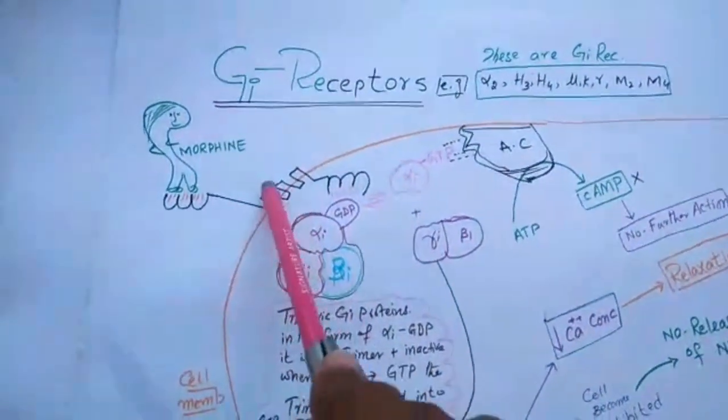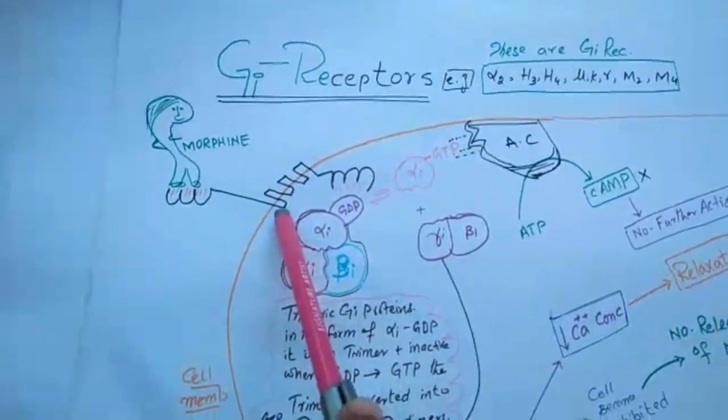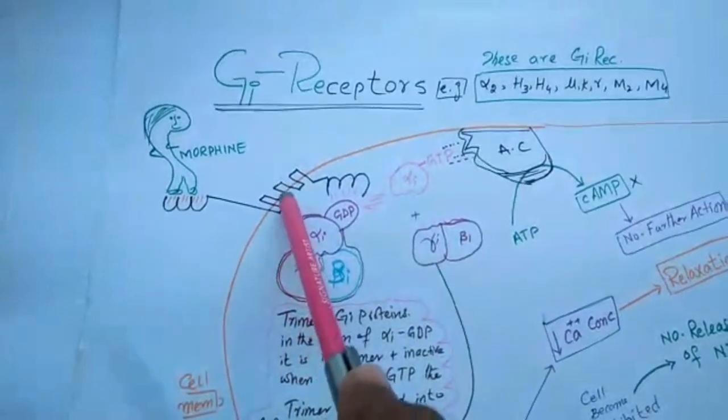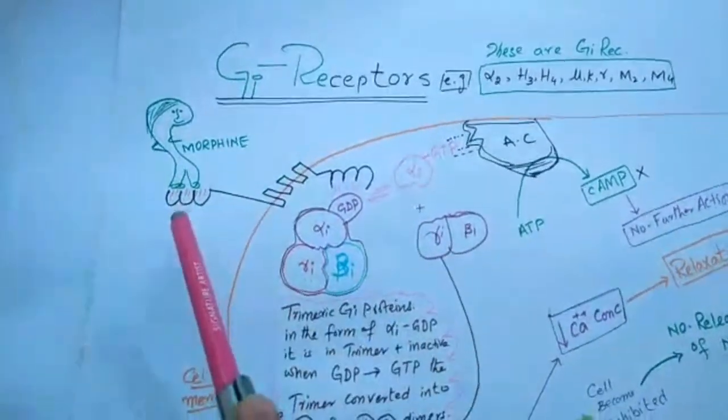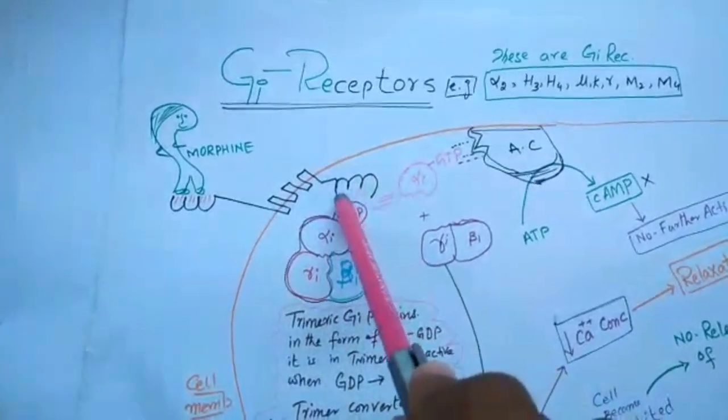This is the GI receptor on the cell surface, crossing the cell membrane seven times: one, two, three, four, five, six, seven. This is the extracellular domain. This one is the intracellular domain.